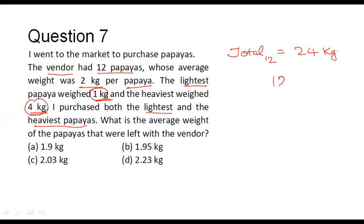So from this 24, what you have to do, you have to subtract 4 plus 1, that is equal to 5. So what is 24 minus 5, that is equal to 19 kilograms. So now, the total weight of all the papayas that is there with the vendor after I have purchased the lightest and the heaviest papayas from him, that corresponds to 19 kilograms.